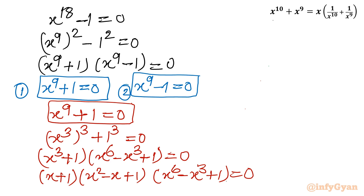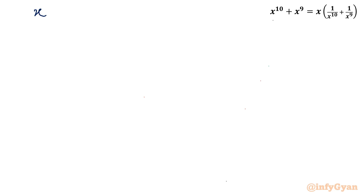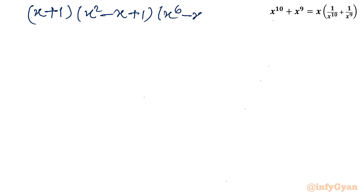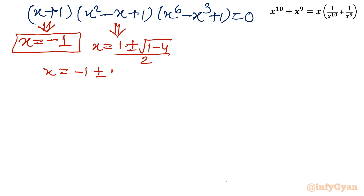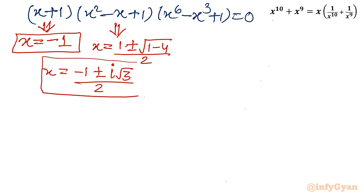From this we find 9 solutions, of which 8 are complex. From the first bracket, x = -1, the second real solution. From the second bracket x^2 - x + 1 = 0, applying the Sridharacharya (quadratic) formula gives x = (1 ± i√3) / 2 — two complex solutions.